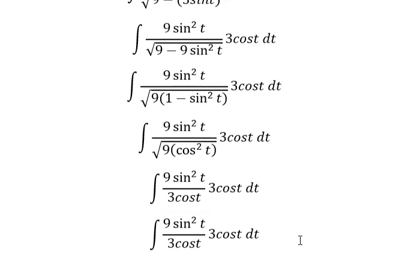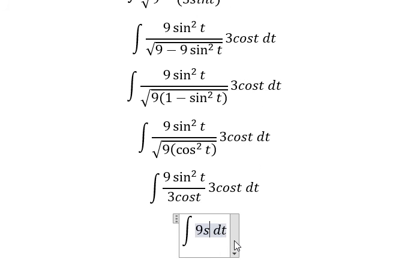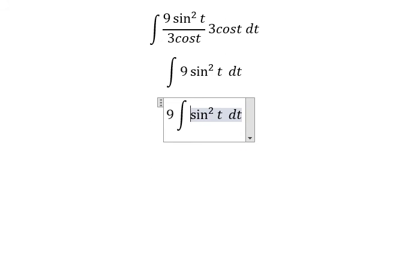So we simplify 3 cos t on numerator and denominator. So I will put number 9 in here. Now we have the formula in here.